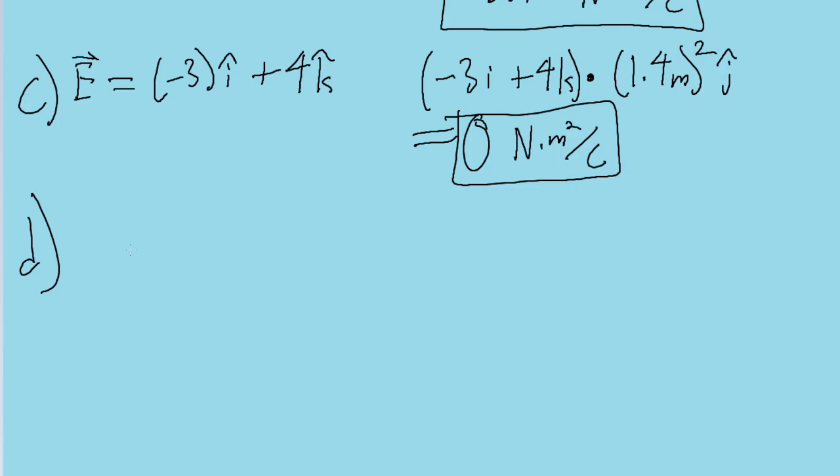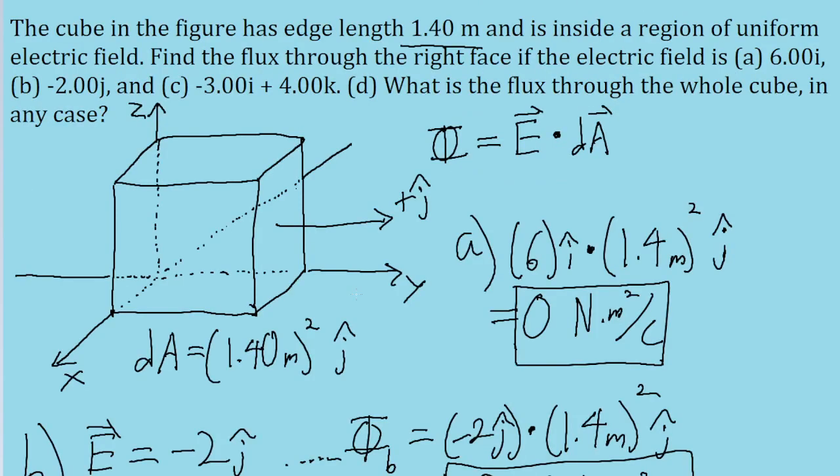because in none of the parts of the problem, none of the parts ever tell us that it changes with position, which would indicate that there's no charge enclosed by the cube. And that means that the net flux through the whole surface is going to be zero. And even if we just look at the diagram and work through it in our heads with the numbers, this is fairly intuitive.